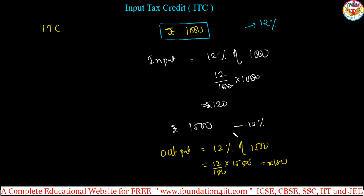Instead of paying 180 the second time, you will get exemption of this 120. So 180 minus 120, only this 60 rupees is supposed to be paid to the government.